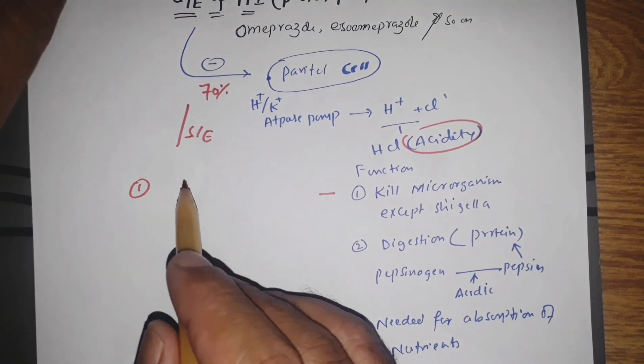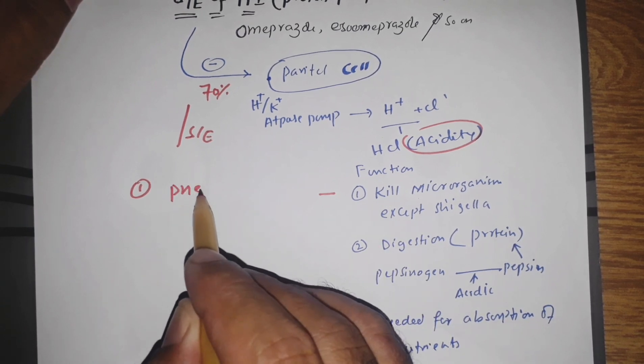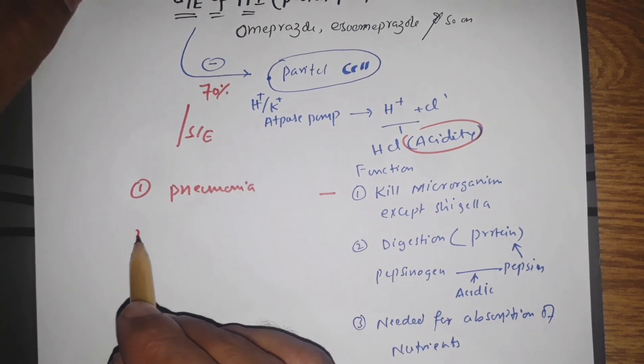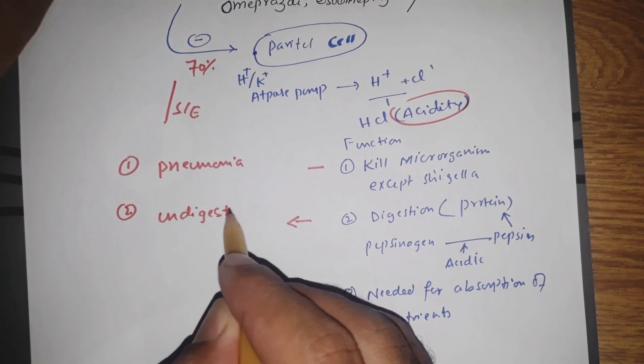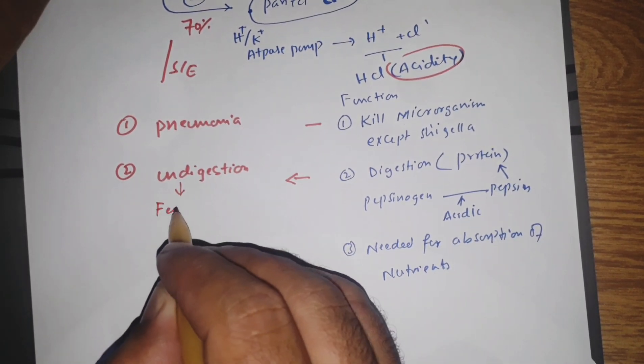If there is decreased acidity, there will be less chance to kill microorganisms, so the chances of pneumonia increase. There will be indigestion—70% of food will be undigested.